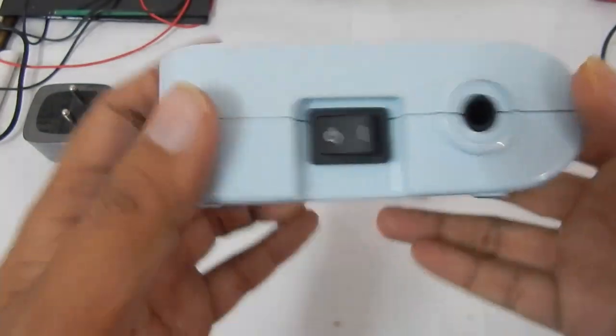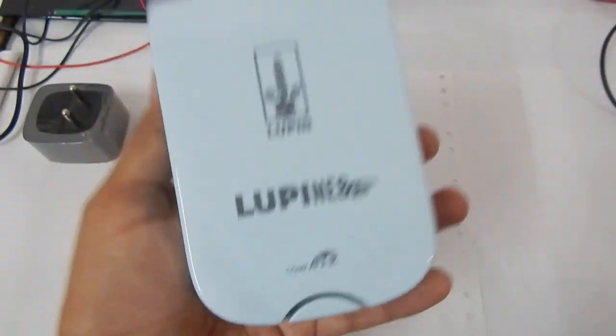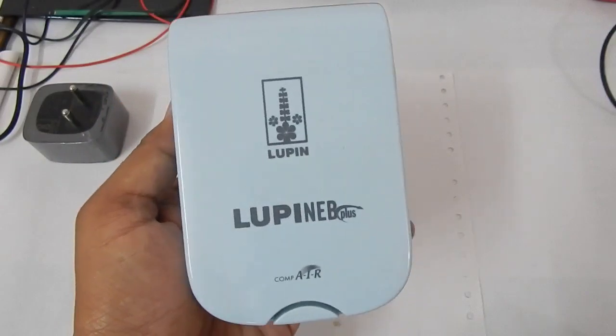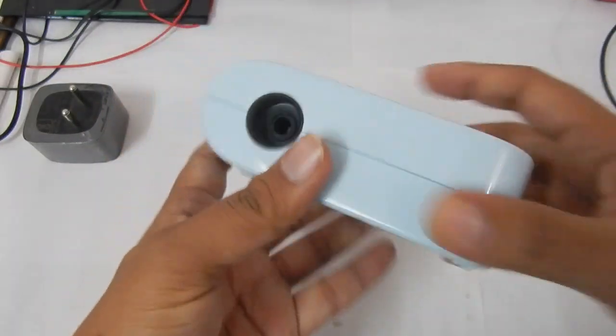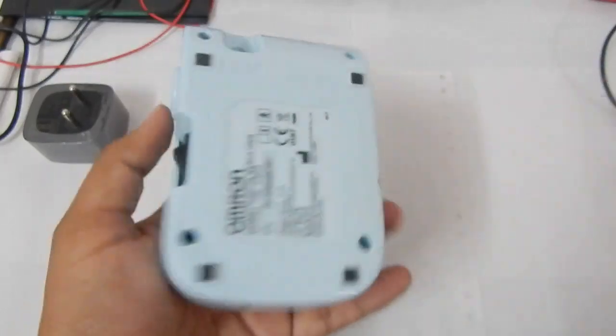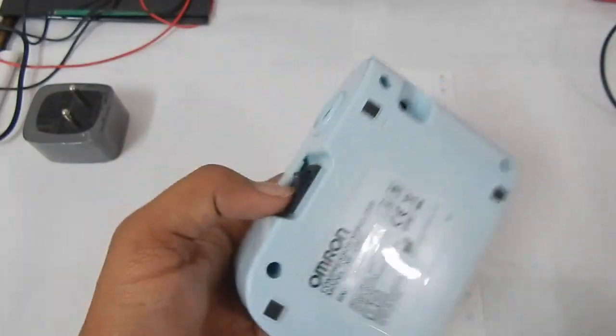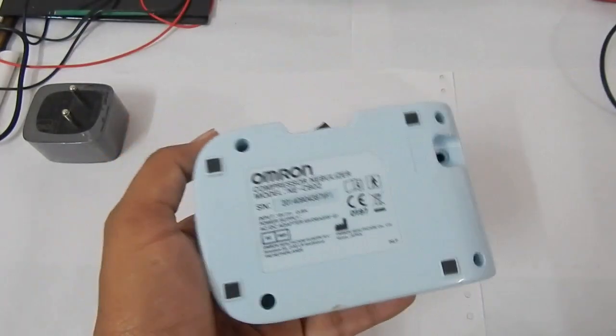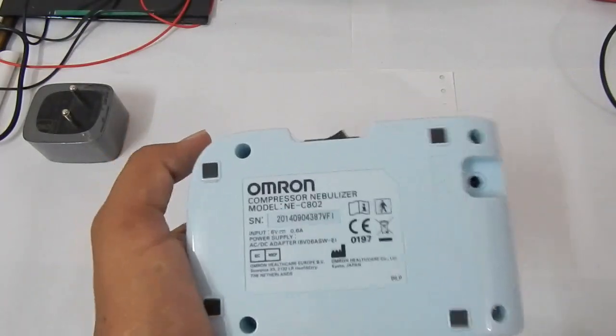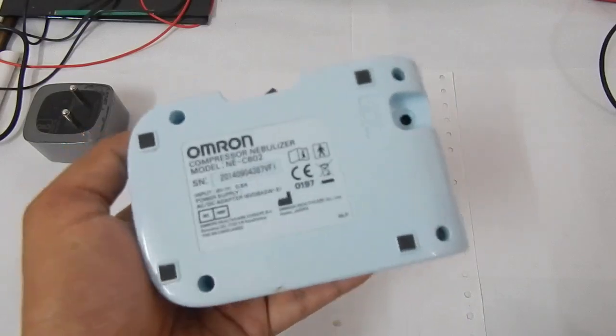This one is from Omron. Omron is a company they make a lot of medical related things. Without any further delay let's try to open it and see what's inside. I'm going to be using it as an aquarium air pump if it works at all.